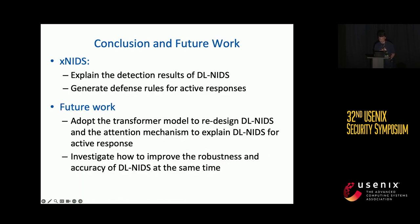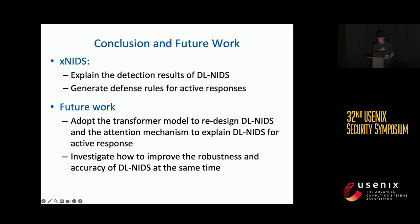In conclusion, our work advances the field of active intrusion response by first explaining detection results and then generating defense rules. In the future, we plan to explore transformers and attention mechanisms to redesign the deep learning-based network intrusion detection system, since a self-explainable model is better than one requiring an extra explanation method. We also want to explore methods to improve robustness and accuracy, balancing adversarial examples in the input space and the embedding space. We hope our work will contribute to the development of more reliable network intrusion detection systems.